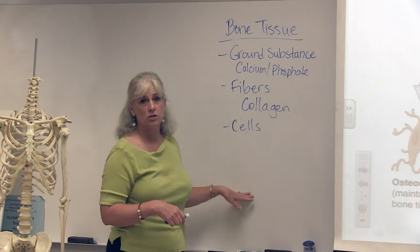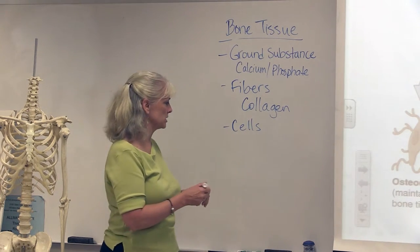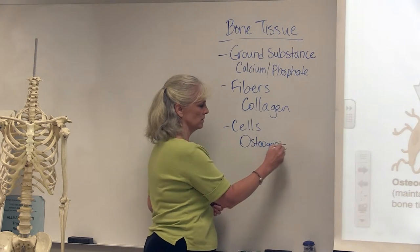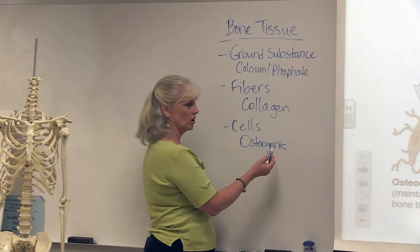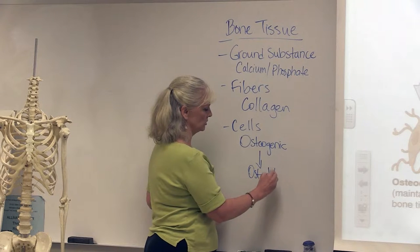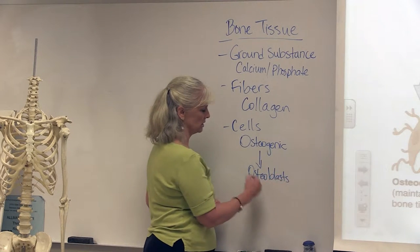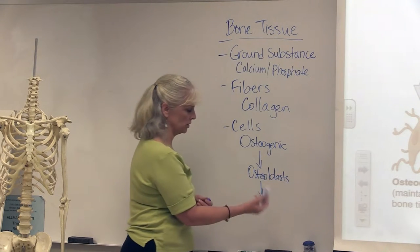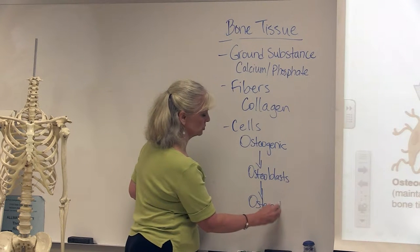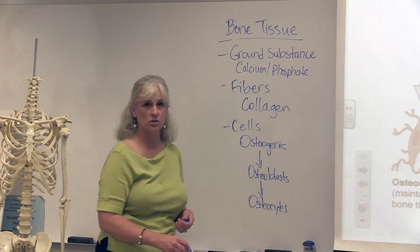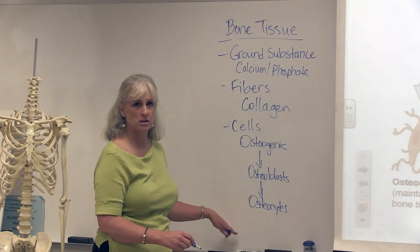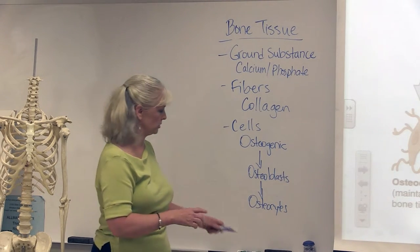The cells of the bone tissue — there are several of them. There are osteogenic cells, which are more like stem cells, and they produce the osteoblasts, which are the young cells that help to build and repair bone. Those will then mature into osteocytes. So those are the three primary cells, and then there's a fourth cell as well.